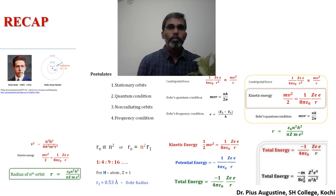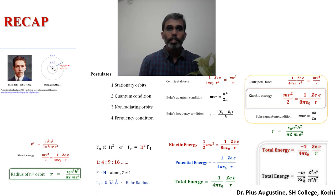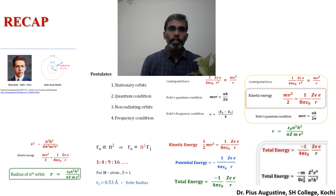The Thomson atom model failed to explain the large deviation of alpha particles in the scattering experiment. Then came the Rutherford atom model. Rutherford proposed a nuclear atom model in which the positive charge is concentrated at the center — what we call the nucleus — and electrons revolve around the nucleus in circular orbits. The centripetal force is provided by the electrostatic force of attraction between the negatively charged electrons and the positively charged nucleus.